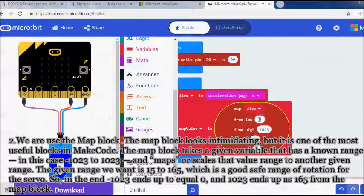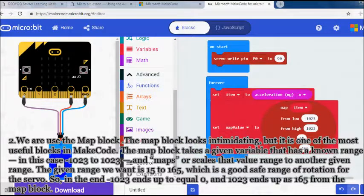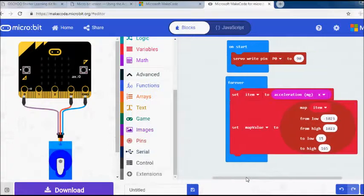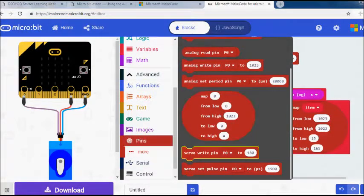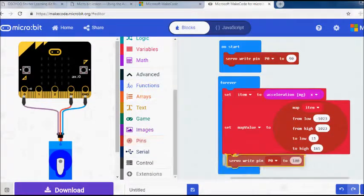and maps or scales that value range to another given range. The given range we want is 15 to 165, which is a good safe range of rotation for the servo. So in the end, minus 1023 ends up equal to 15, and 1023 ends up as 165 from the map block.